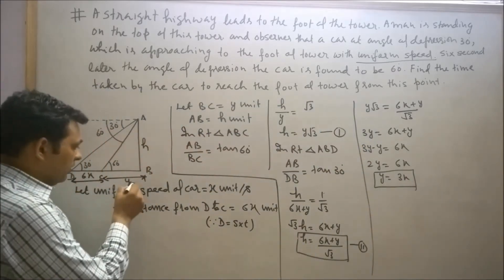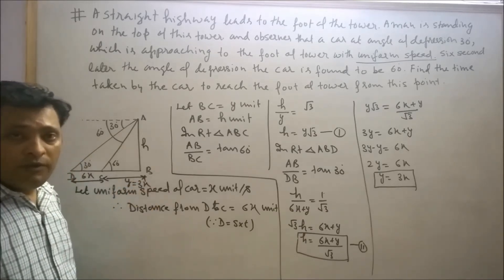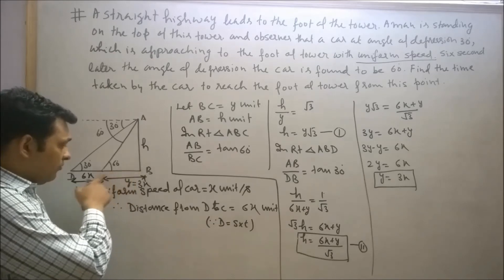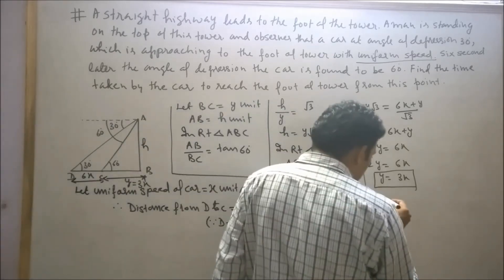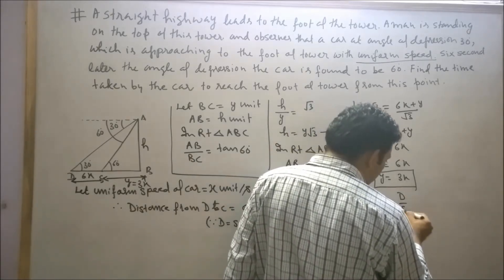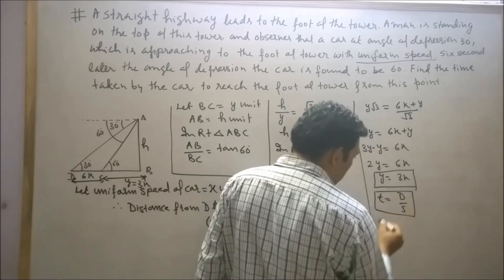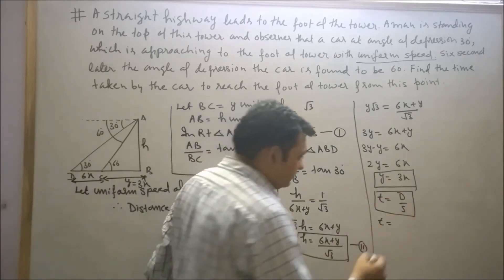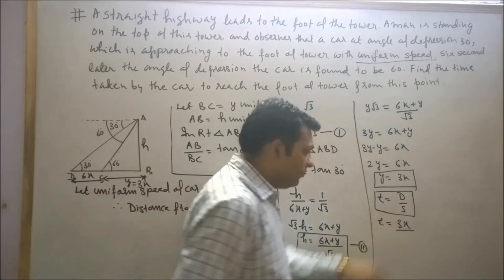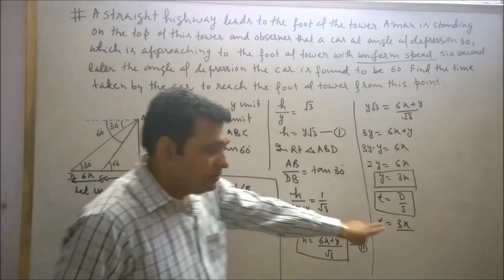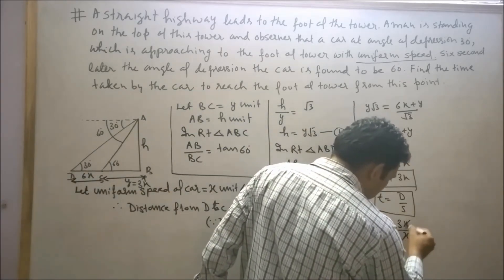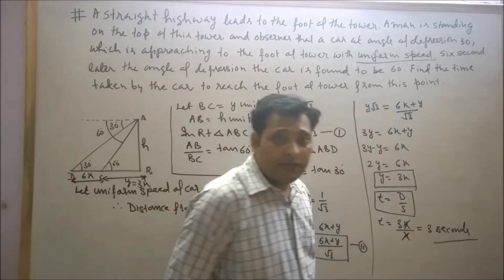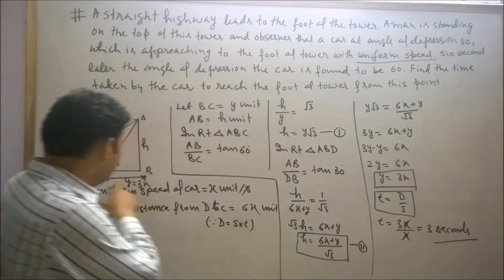We have found that y equals 3x. Our requirement is to find the time for the car to travel from point C to point B. Time equals distance divided by speed, so time equals 3x divided by x, which equals 3 seconds. So the car will take 3 seconds to reach the foot of the tower from point C.